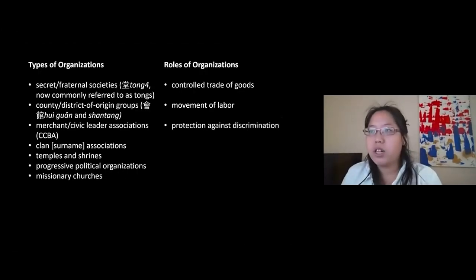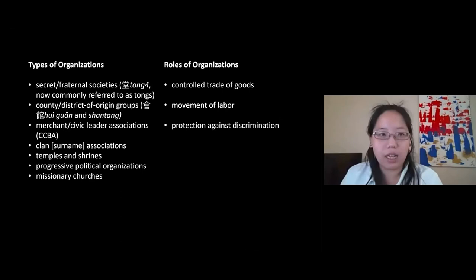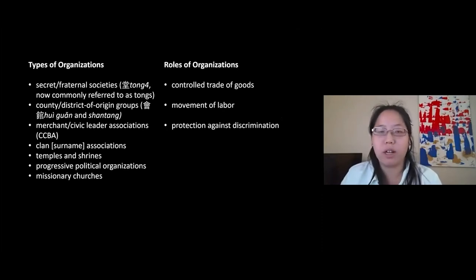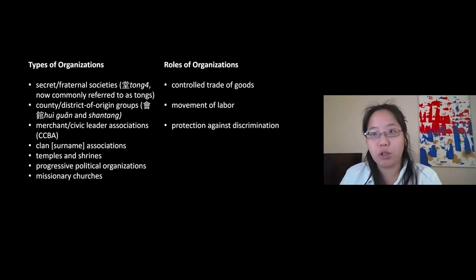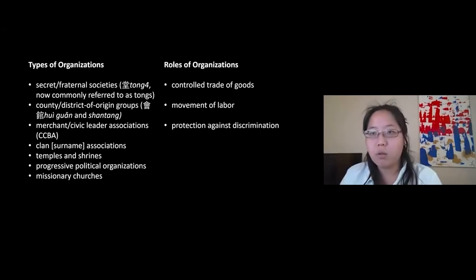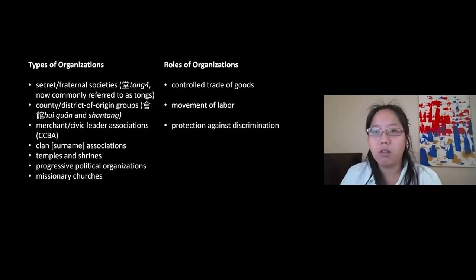Part of the Chinese community structure created during these migrations was the formation of many different types of organizations. These varied in range, including secret societies or tongs — some familiar from the tong wars — county and district origin groups, merchants and civic leader associations, the most famous being the CCBA or Chinese Consolidated Benevolent Association, clan or surname associations, temples and shrines, progressive political organizations, and missionary churches. These organizations served a really important role by controlling trade of goods, the movement of labor, and ultimately protection against discrimination.